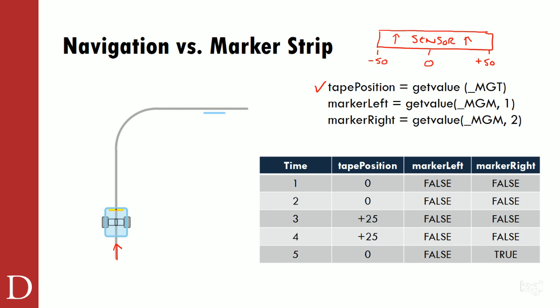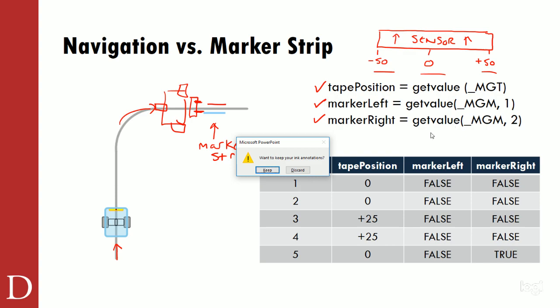This week we're going to use a couple of boolean values - I'll call them marker left and marker right. There's a marker strip here, and as the vehicle comes around the corner, the marker strip will be on the right-hand side of the sensor. Boolean values mean they're going to be true or false - unlike the integer from tape position, the marker strip will just be true or false. You just get: is it there or not?